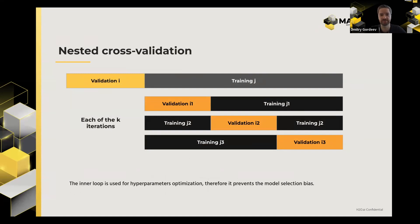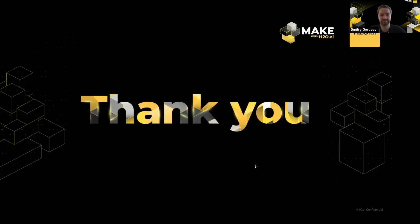One more thing to keep in mind: nested cross-validation, which you might consider if you're struggling with leaks or want a very robust pipeline. It's essentially running cross-validation within cross-validation. For K-fold, this means building K-squared models in total, but it compensates for introducing model selection bias.